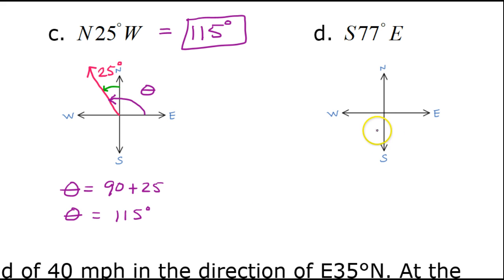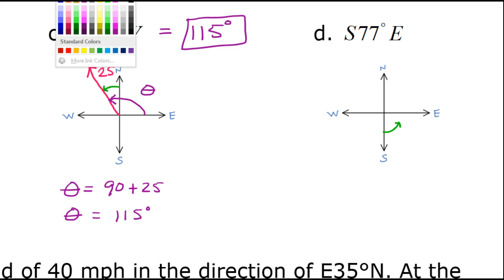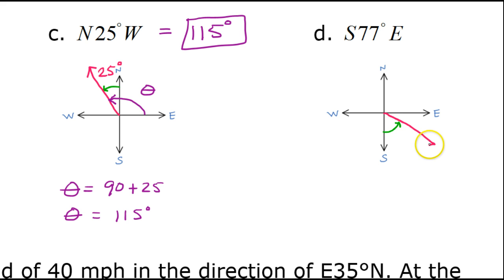All right, we've got one more left. I encourage you to pause the video and do this one by yourself. South 77 degrees east. That means start at south and then turn 77 degrees towards the east. So if I start at south and I begin to turn 77 degrees towards the east, then the vector is going to end up here, and this is my 77 degree angle.